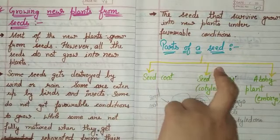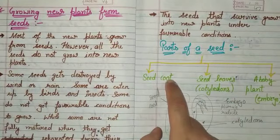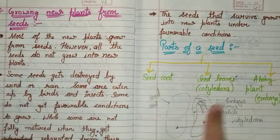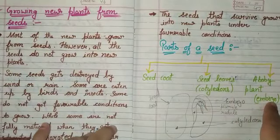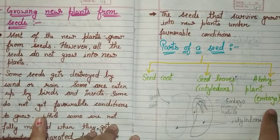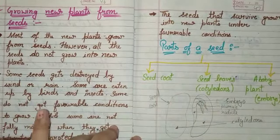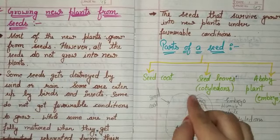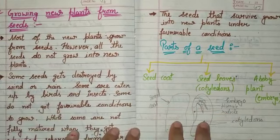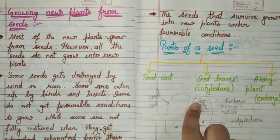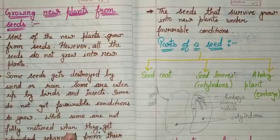There are three parts of a seed. First is the seed coat. Second are the seed leaves, called cotyledons. Third is the baby plant, called the embryo. The seed coat is the upper layer of the seed. Cotyledons are in the middle part. The embryo is the part in which a new baby plant grows.